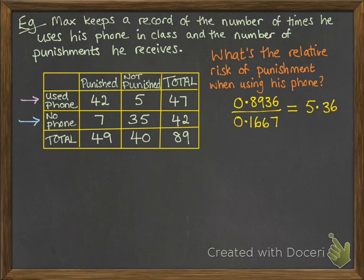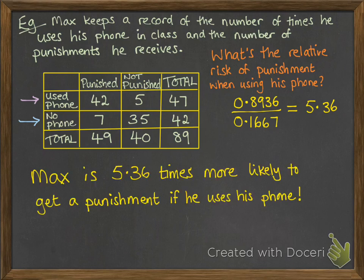Now, a lot of the time you'll need to think about what that actually means. So in this situation, it means that Max is 5.3 times more likely to get a punishment in lessons if he uses his phone. So if he doesn't want to receive punishments, he should keep his phone in his bag.